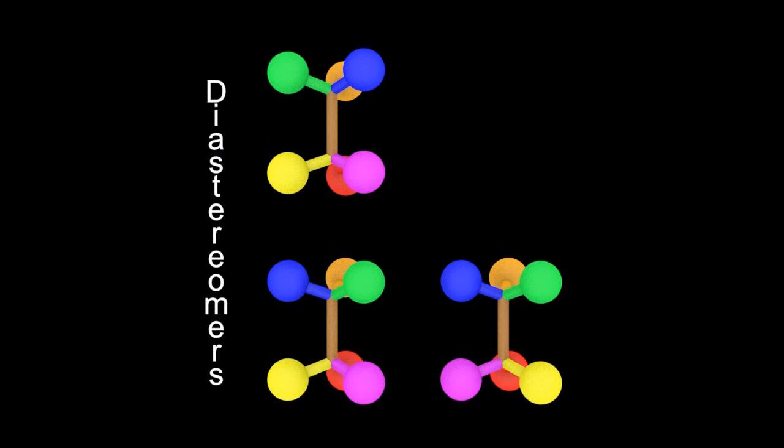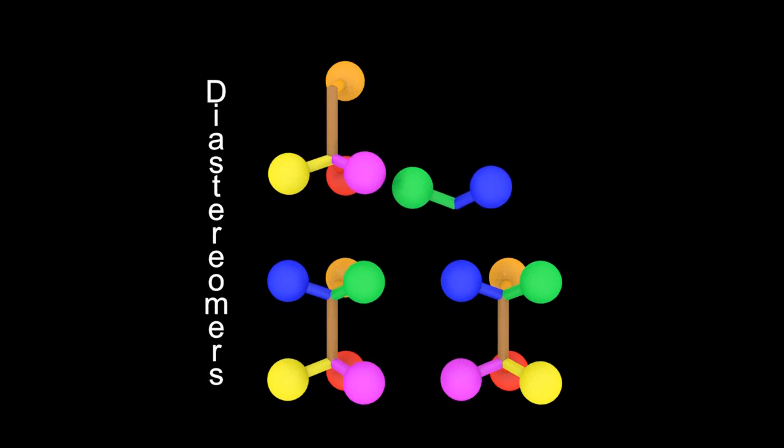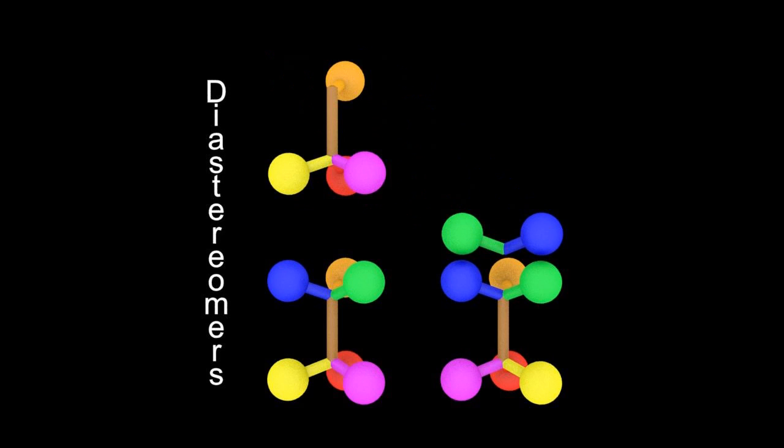And what's the relationship of the top one to the bottom right one? Well, I switched around two at the bottom, so I changed the bottom chiral carbon. And I switched around two at the top, so I changed the top chiral carbon.